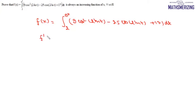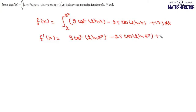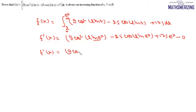We find f'(x) using the Leibniz rule. f'(x) will be [9cos²(2ln(eˣ)) - 25cos(2ln(eˣ)) + 17] multiplied by the derivative of the upper limit, which is eˣ. The lower limit is constant, so its derivative is 0. Since 2ln(eˣ) = 2x, we can write f'(x) as [9cos²(2x) - 25cos(2x) + 17] · eˣ.